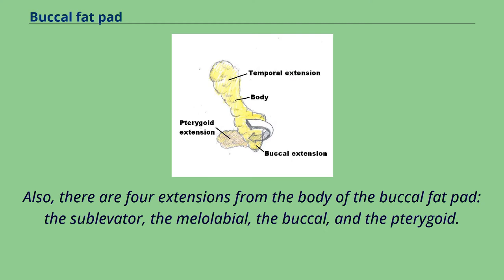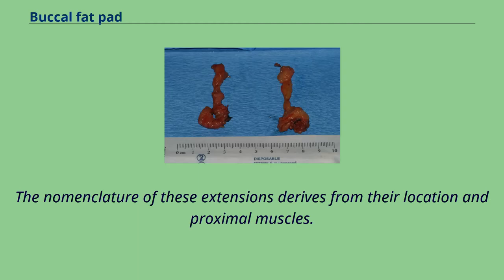Also, there are four extensions from the body of the buccal fat pad: the sublevator, the melolabial, the buccal, and the pterygoid. The nomenclature of these extensions derives from their location and proximal muscles.